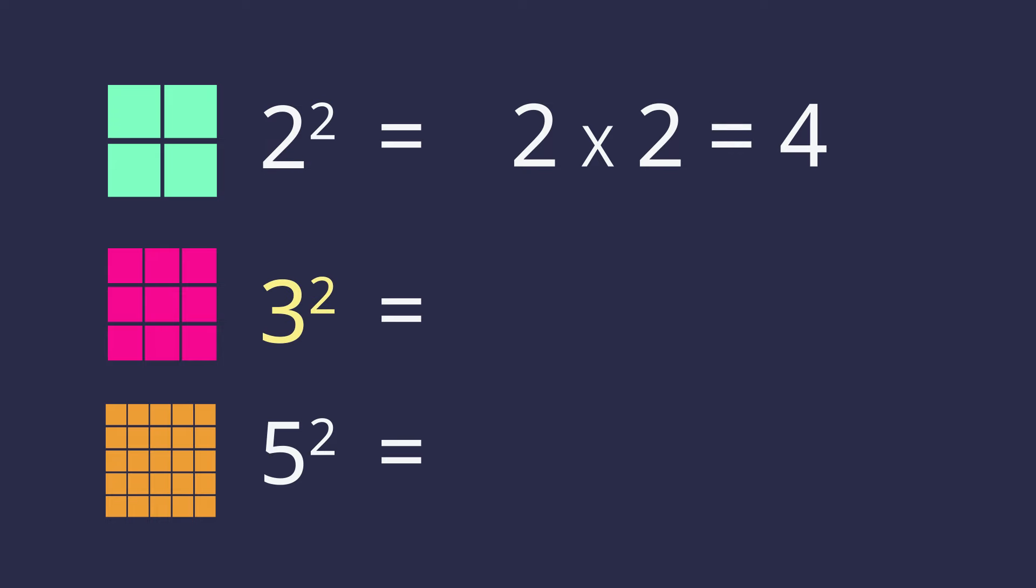3 squared equals 3 times 3, which is 9. 5 squared equals 5 times 5, which is 25.